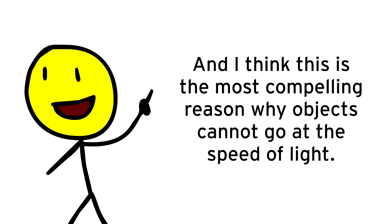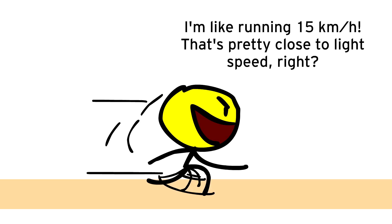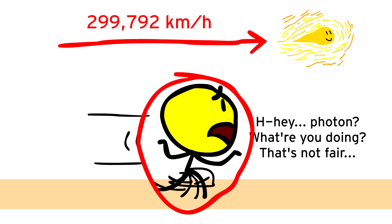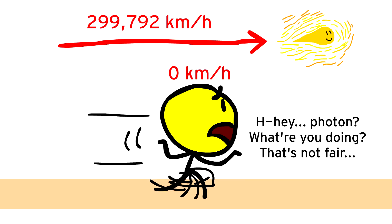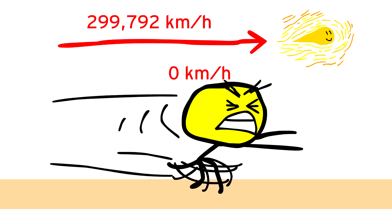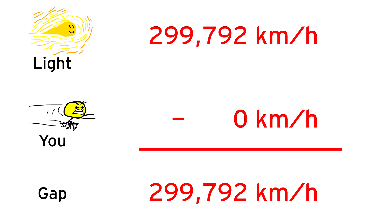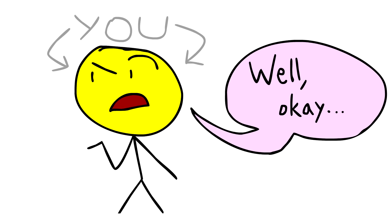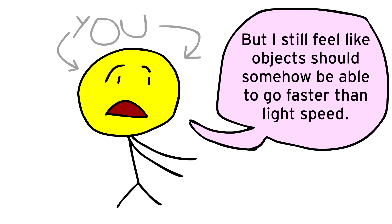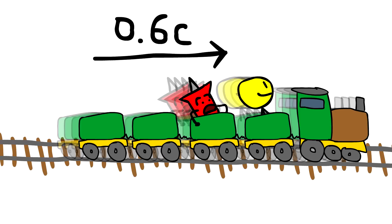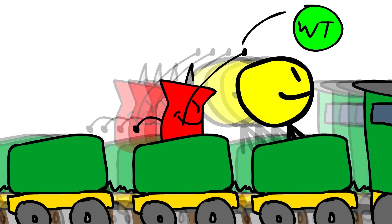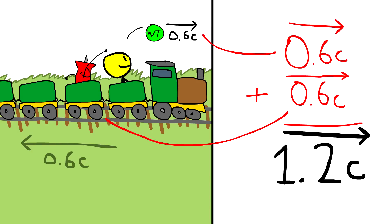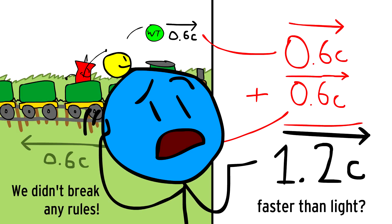And I think this is the most compelling reason for why objects cannot go at the speed of light. No matter how fast you go, light always appears to go at around 299,792 km/s relative to you, whereas you only appear to go at 0 km/s relative to yourself. No matter how much energy you put in to move forward, you'll always have that 299,792 km/s gap between you and light. It's like you're running in a giant hamster wheel, but getting nowhere. But you might say: I still feel like objects should somehow be able to go faster than light speed. What if Pin starts moving at 60% the speed of light, and then she throws the wind token she's been holding at 60% the speed of light relative to her? 60% C plus 60% C is 120% C, which is faster than the speed of light — and we didn't even break any rules in the scenario we just described.